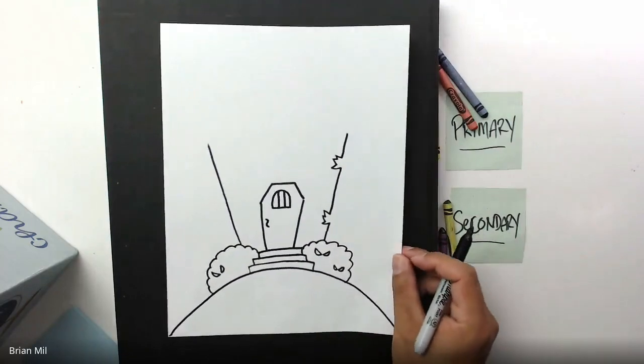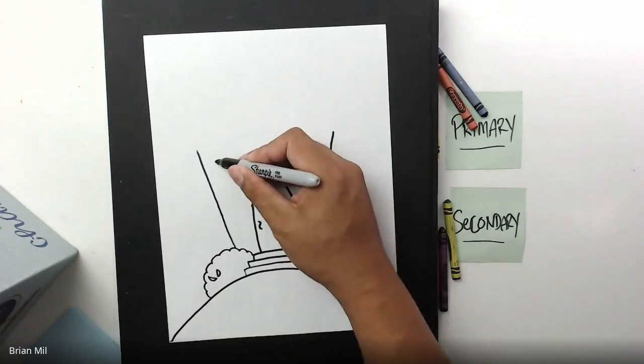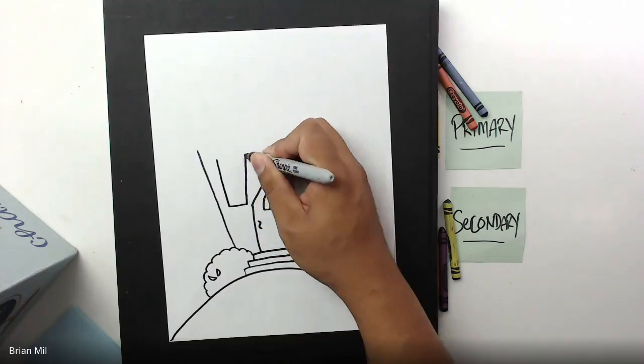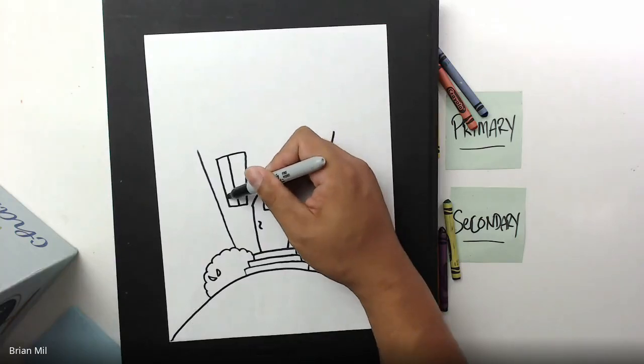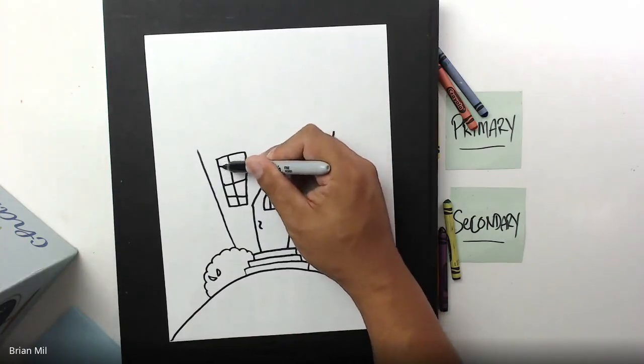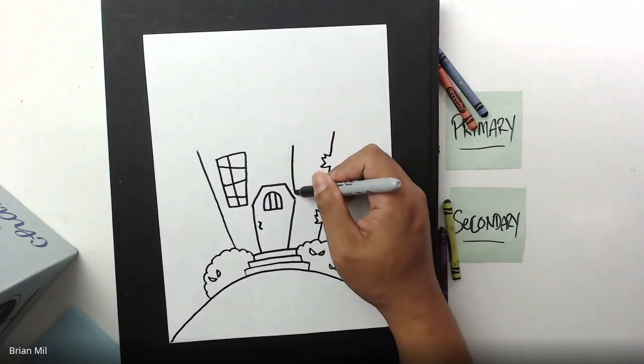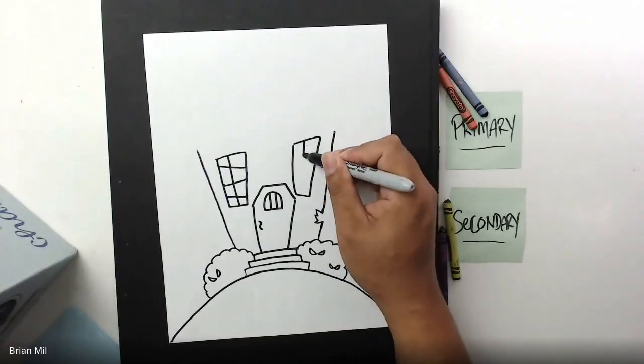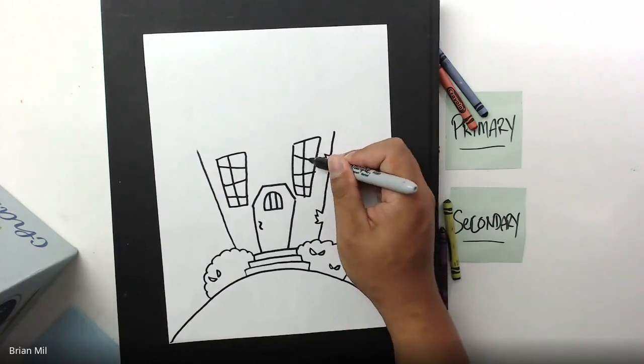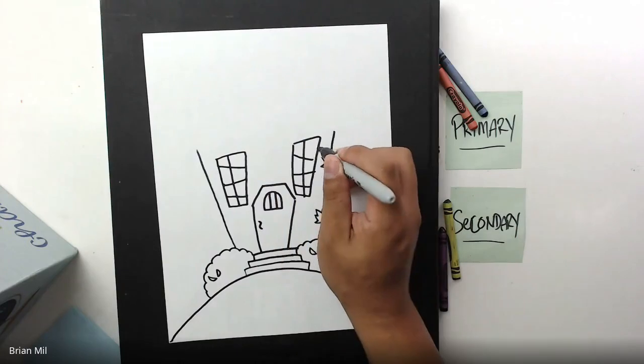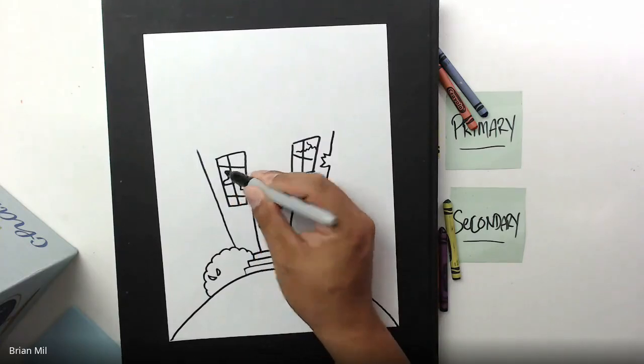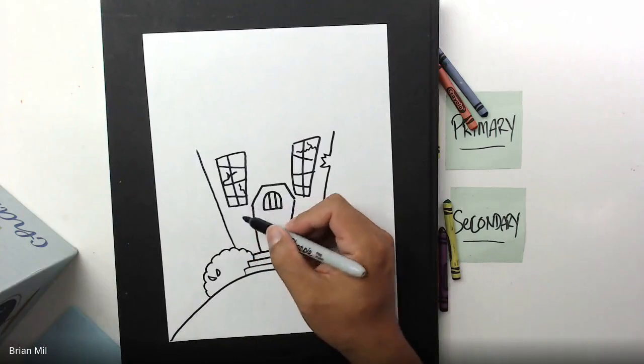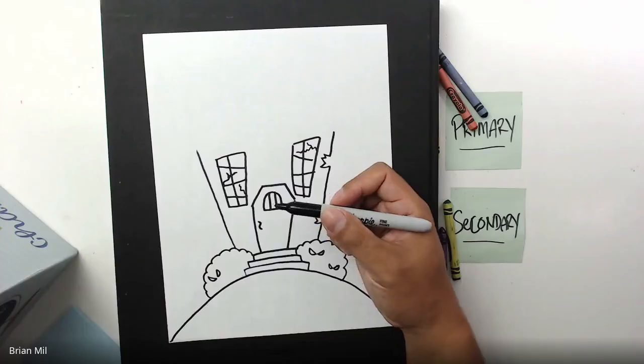What I want to do next is I want to add some nice super tall windows, and I want to make them asymmetrical, meaning that they're not going to be balanced in a way that's making sense. I want to make them a little crooked, just like so. Maybe I'll add another window right here, nice and crooked, so nothing matches. If you want to add some broken windows, you can kind of add lightning bolts to a part of the window and then it'll symbolize that there's cracks in the window.